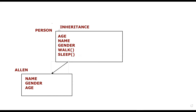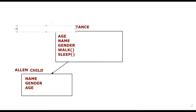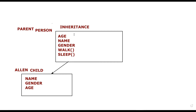The class which is inheriting properties of another class is called the child class. The child class can inherit properties of the parent, but the parent cannot inherit properties of the child.